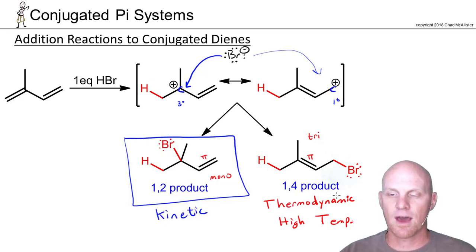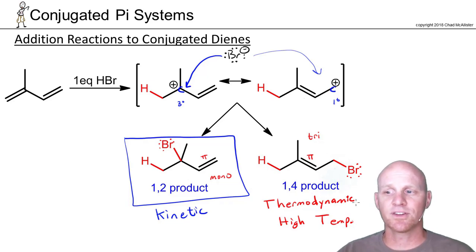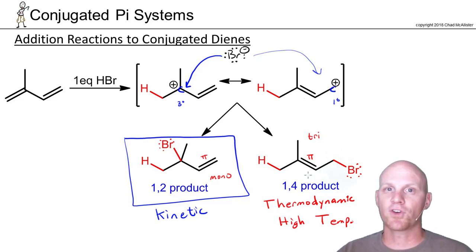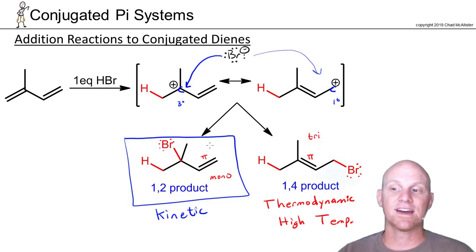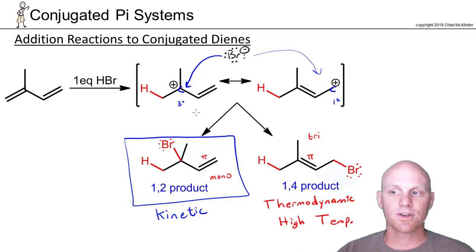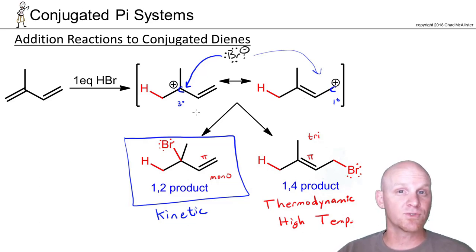Thermodynamics concerns delta G, delta H, and delta S — state functions that are path-independent; we just compare the two products. Kinetics is all about the pathway and the lowest activation energy. To identify the kinetic product, go back to the carbocation intermediate and determine which attack site has lower activation energy. Generally: look at your two resonance structures — whichever has the more substituted carbocation, attacking there gives your kinetic product.